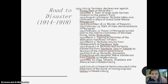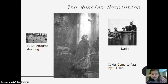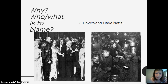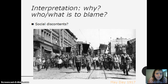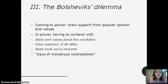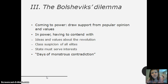This is a timeline of the Russian Revolution. Who was to blame? War, the haves and have-nots, and social discontent. The Bolsheviks' dilemma in coming to power was drawing support from popular opinion, contending with ideas and values about the revolution, class suspicion of all elites, the state serving interests — days of monstrous contradiction.